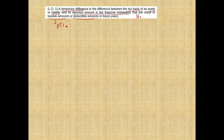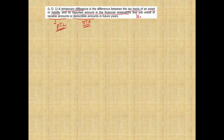A taxable amount might result in a deferred tax liability, or a deductible amount might result in a deferred tax asset. So a temporary difference will give you either a deferred tax asset or a deferred tax liability depending on what that difference is.